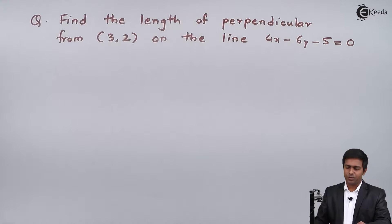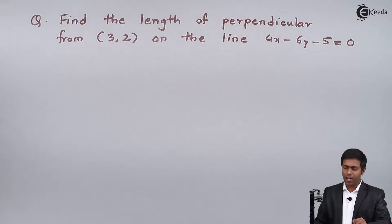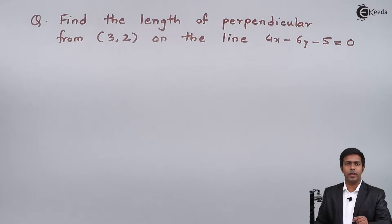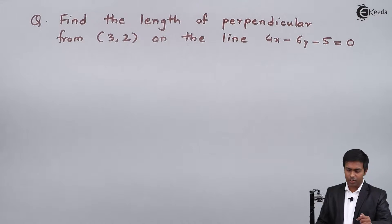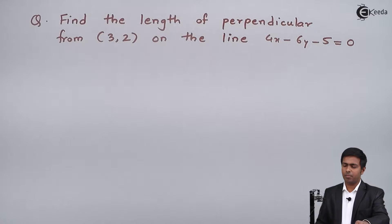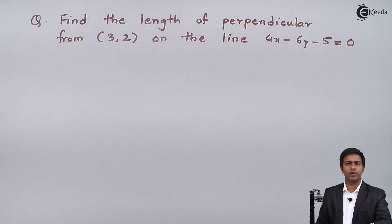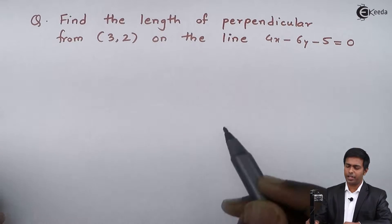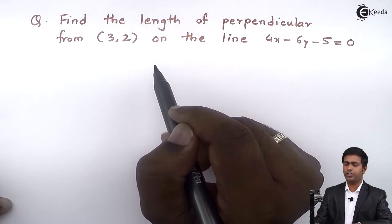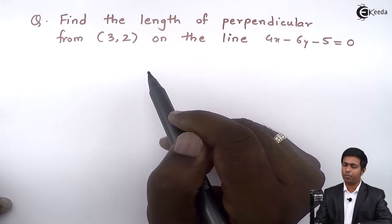Hello everyone. In this problem we have to find out the length of perpendicular from point (3, 2) on the line 4x minus 6y minus 5 equal to 0. Before finding the length of perpendicular from this point, let's visualize the given problem.